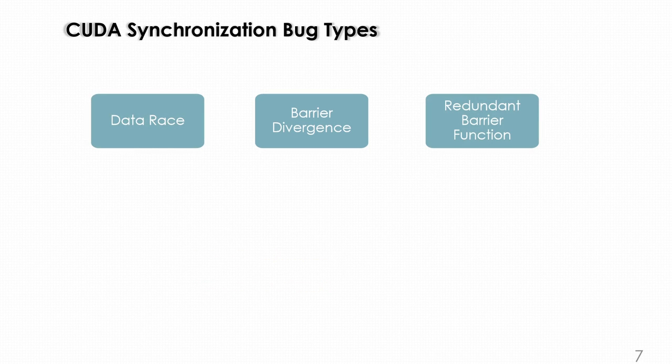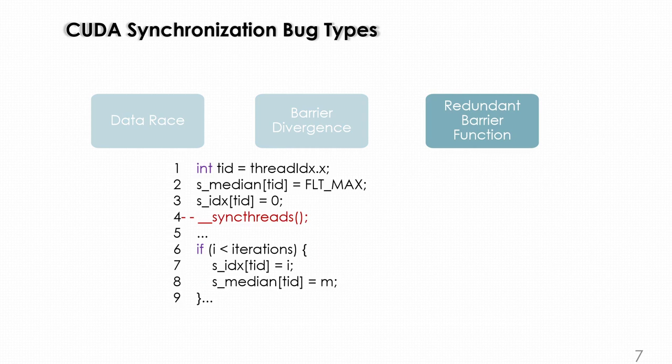What about a redundant barrier function? A redundant barrier function is redundant when no data race is triggered after deleting it. We can see here, we deleted the barrier function at line 4, and nothing happened in terms of synchronization bugs.